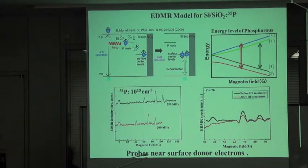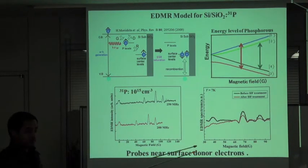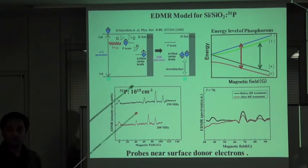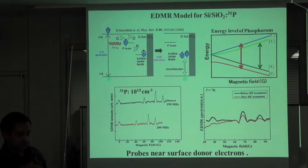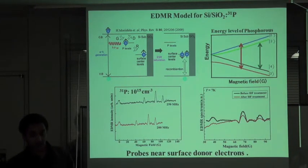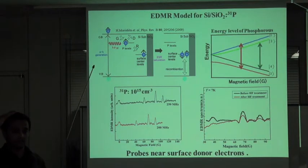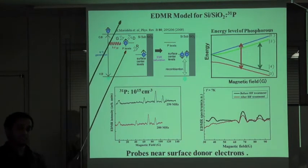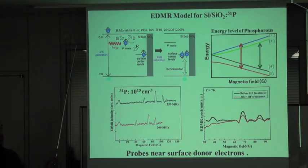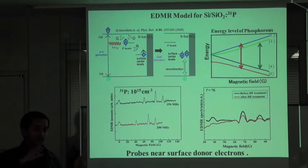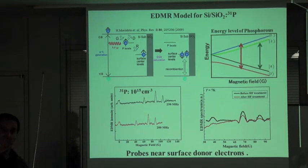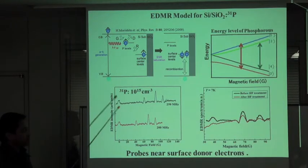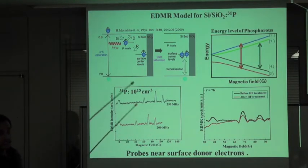What we were probing was only donor electrons very near to the surface, because bulk donors are far from the PV centers—the distance is very large, so recombination time would be very long. Therefore, only those phosphorus atoms located within approximately 4 nanometers of the surface contribute to the EDMR signals. Until now, only surface phosphorus electrons have been probed using EDMR.